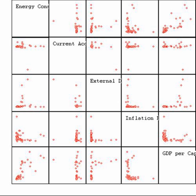Today, statistics is widely employed in government, business, and natural and social sciences. Its mathematical foundations were laid in the 17th century with the development of probability theory by Gerolamo Cardano, Blaise Pascal, and Pierre de Fermat. Mathematical probability theory arose from the study of games of chance, although the concept of probability was already examined in medieval law and by philosophers such as Juan Caramuel. The method of least squares was first described by Adrien-Marie Legendre in 1805.